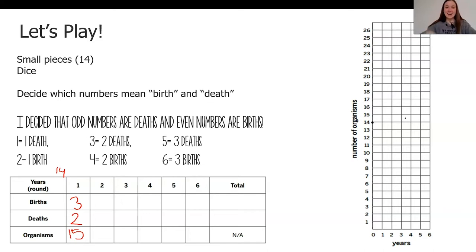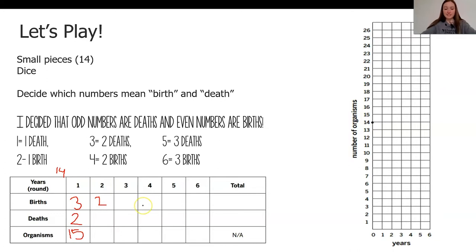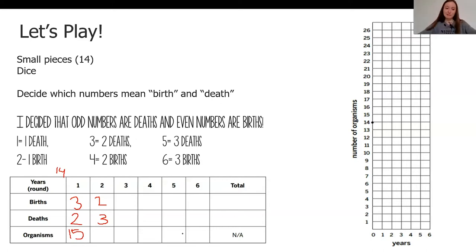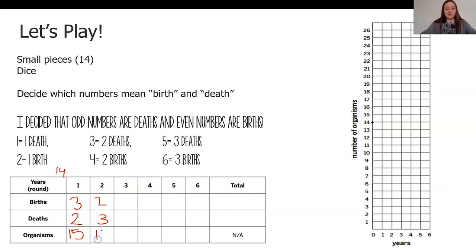This time I rolled a five and a four. A four means two births and a five means three deaths. I'm going to write that in and add two tokens back into my circle for two births, but take out three organisms for three deaths. Counting it up, I have 14 organisms this time in my population circle.